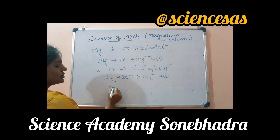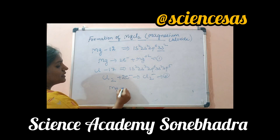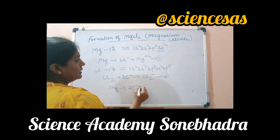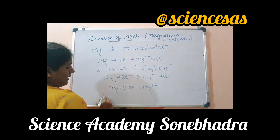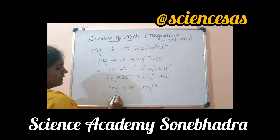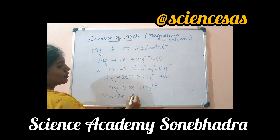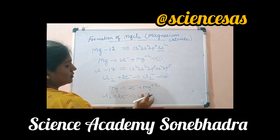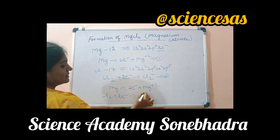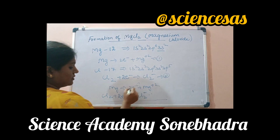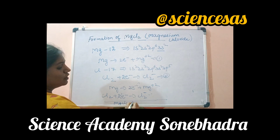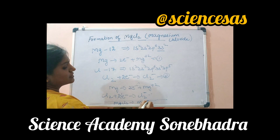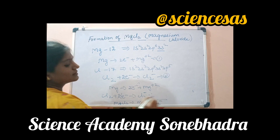Combining both equations: magnesium gives two electrons and becomes Mg²⁺, and the two chlorine atoms take those two electrons and become 2Cl⁻. The electrons cancel out, and we are left with MgCl2, formed from Mg²⁺ and 2Cl⁻.